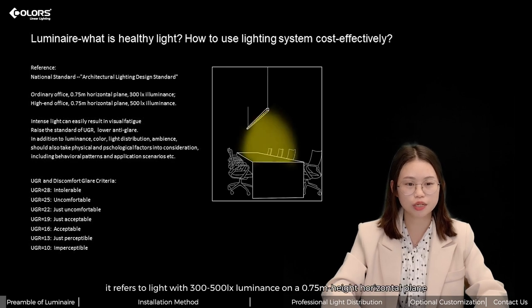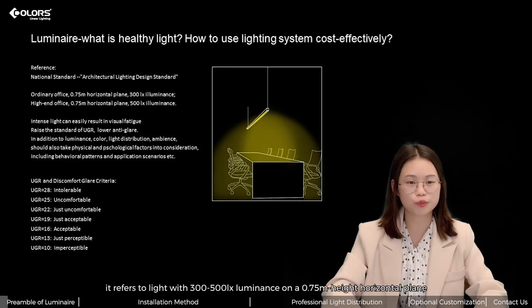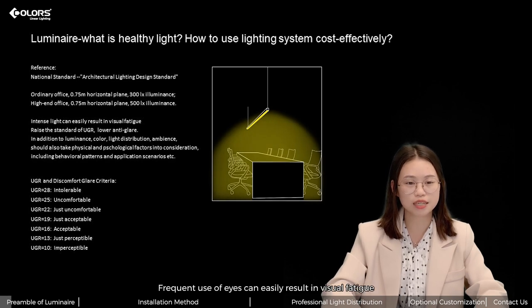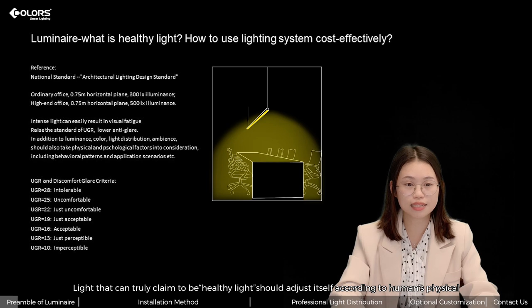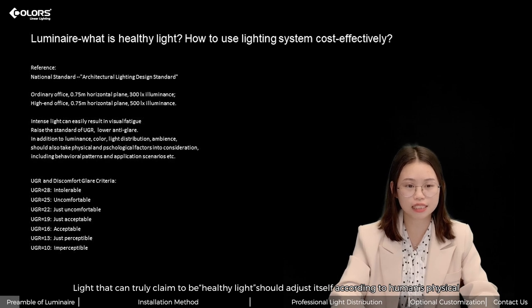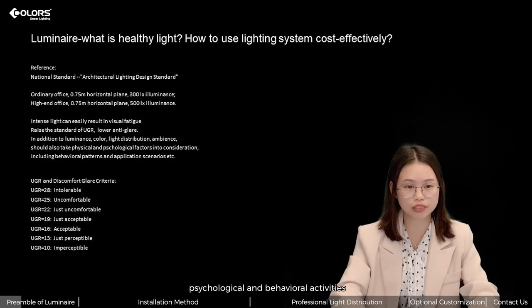As our national standard, we refer to light with 300 to 500 lux luminance on a 0.75-meter horizontal plane. Frequent use of eyes can easily result in visual fatigue. Higher UGR standard with lower anti-glare value can better suit our eyes. Light can truly claim to be healthy light should adjust itself according to human physical, psychological, and behavioral objectives.